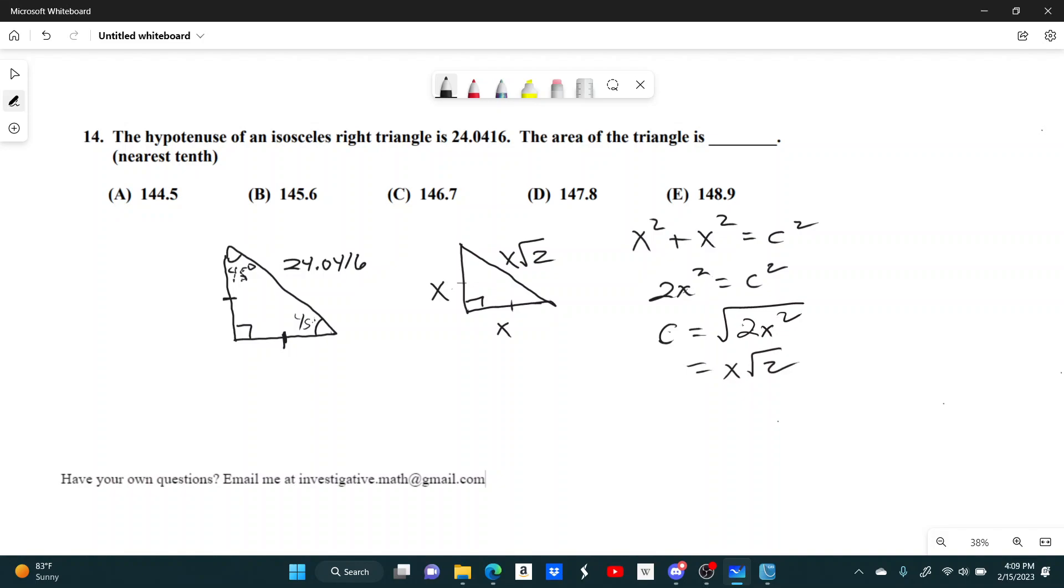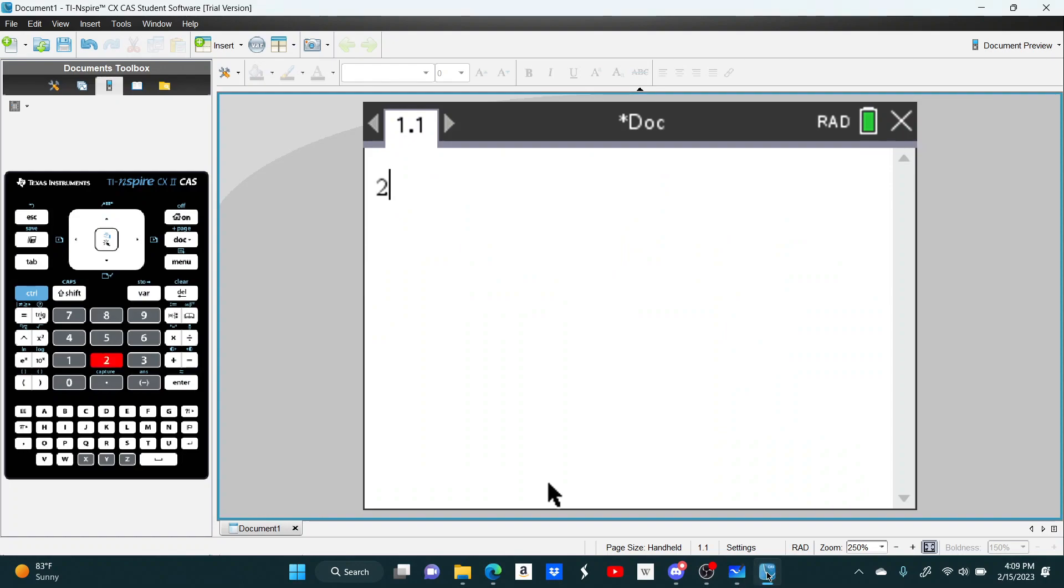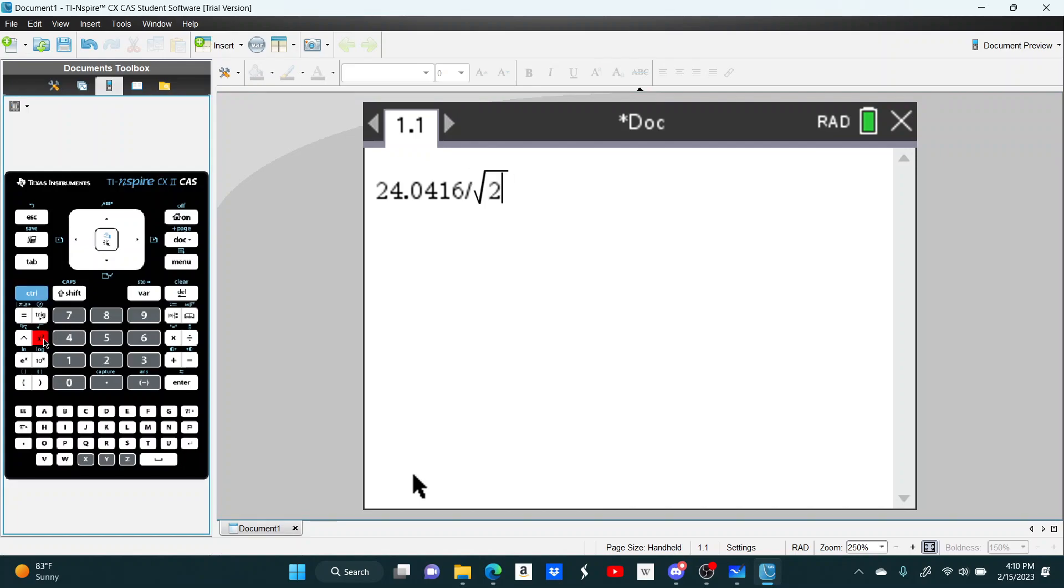If 24.0416 is equal to x times the square root of 2, then x is just that divided by the square root of 2. So 24.0416 divided by the square root of 2 tells you the side length.